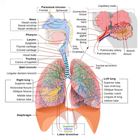In humans and other mammals, the anatomy of a typical respiratory system is the respiratory tract. The tract is divided into an upper and a lower respiratory tract. The upper tract includes the nose, nasal cavities, sinuses, pharynx and the part of the larynx above the vocal folds. The lower tract includes the lower part of the larynx, the trachea, bronchi, bronchioles and the alveoli.